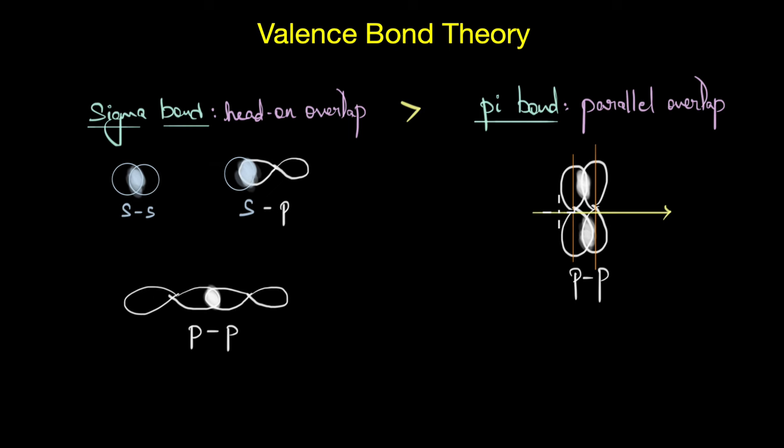Now, all of these postulates of VB theory makes a lot of sense when we think about bonding, correct? But unfortunately, that was not the case. The simple overlapping of atomic orbitals could not explain bonding and geometry in molecules, and we needed further modifications in the Valence Bond theory to explain the shapes of these molecules. And that modification is otherwise called hybridization. So let's learn more about hybridization in the next video.